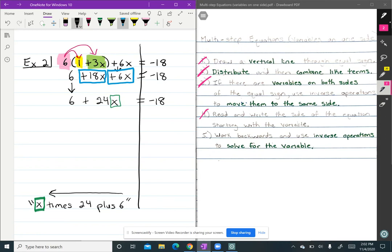So the last thing I read was plus 6. So the opposite or inverse operation would be subtraction, so minus 6 on both sides. And positive 6 minus 6 equals 0. 24 X drops down. And then negative 18 minus 6 gives me negative 24. I can cross out that step.